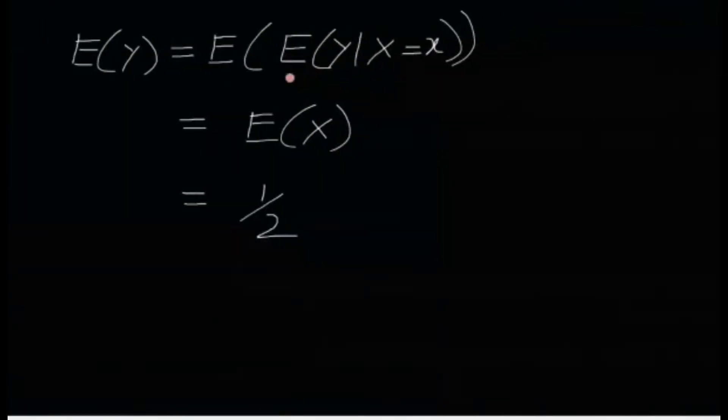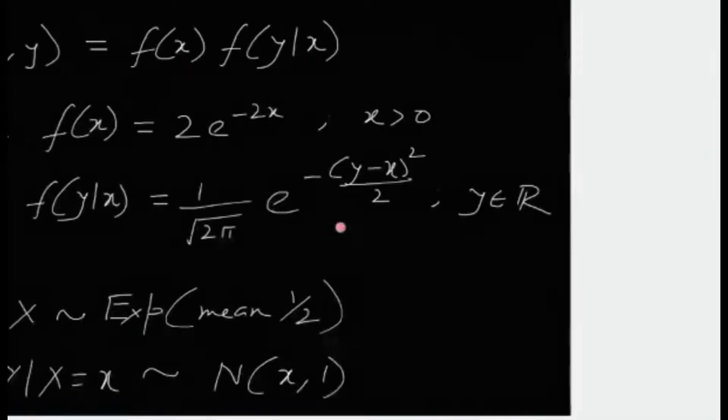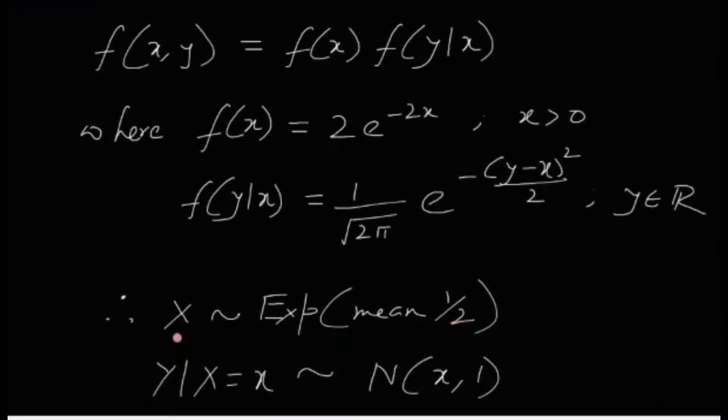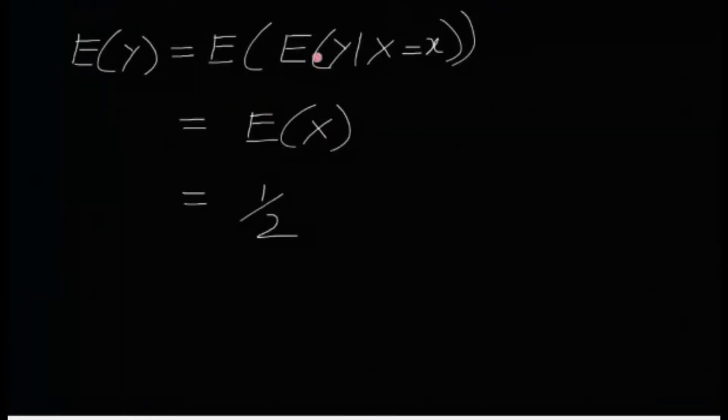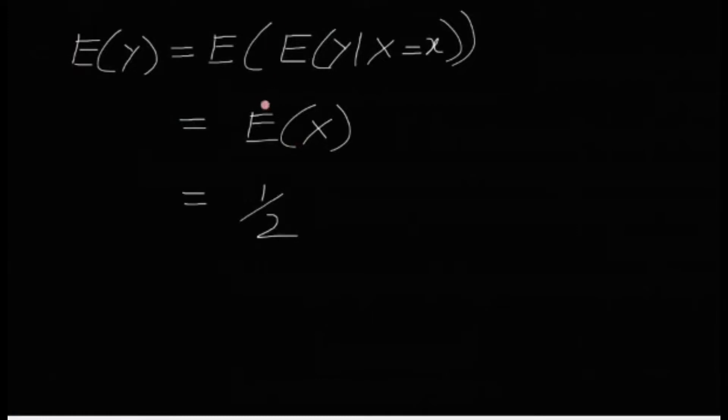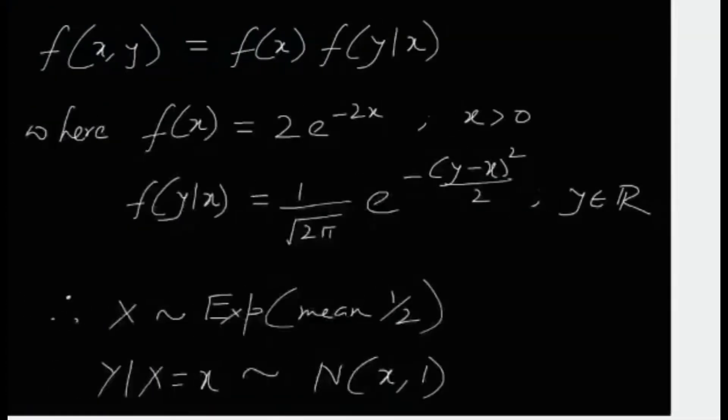Therefore, this part, this expectation of Y given X is actually x. And the expectation of X is obviously half. It's exponential with mean half. X follows exponential with mean half. Therefore, expectation of X is half. Therefore, expectation of Y is nothing but half. It's a very easy problem, actually.